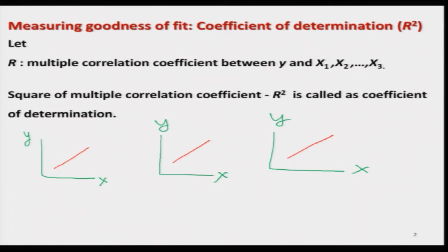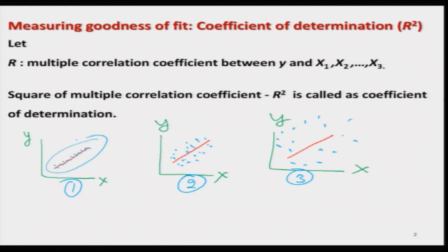Now you try to look at the concentration of the data around the line. Here the points are very close to the line, here there is more scatter — the scales on x and y are the same — and here the scatteredness is even more. In case number 1, 2, and 3, do you think the model will be good? Obviously, in case number 1 the points are lying very close to the line, so the fitted model should be good, whereas in case number 2 the points are quite away from the fitted line, and in case 3 most of the points are far away from the fitted line.